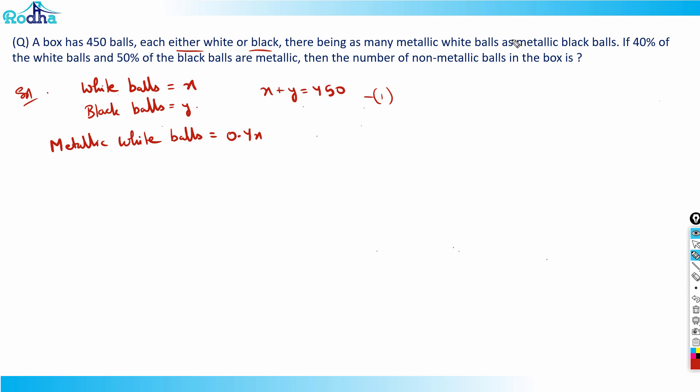And metallic black balls will be equal to 50% of black balls, that is 0.5Y. As per this condition, both these are equal, so 0.4X equals 0.5Y, which means 4X equals 5Y. That means the ratio X to Y is 5 to 4.